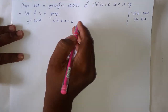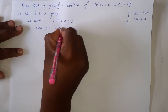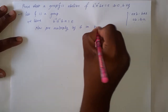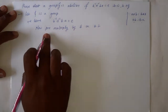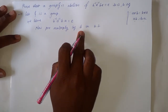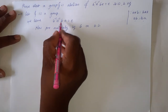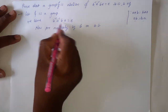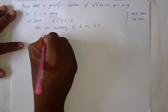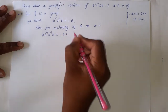Now pre-multiply by B on both sides of the above expression. Pre-multiplication means we multiply the element B on the left sides of the expressions B inverse A inverse BA and E. So if we multiply by B then it becomes B B inverse A inverse BA is equal to BE.